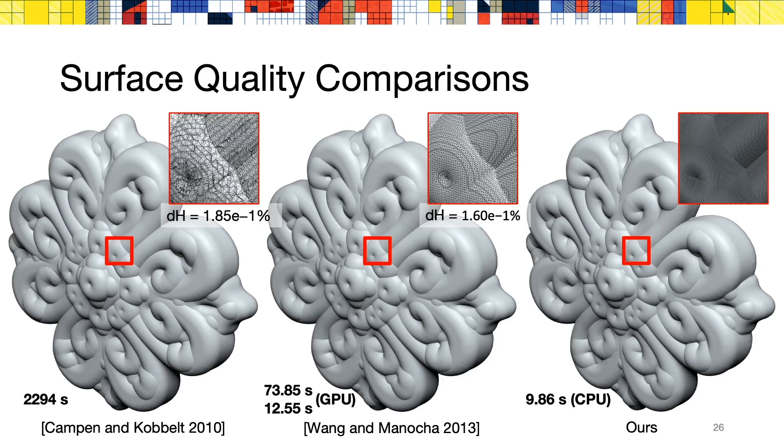In this slide, we show some qualitative results on the surface quality. One advantage of our method is that it computes an exact offset of the input dexels. As such, our results exhibit a good surface quality if the input shape was sufficiently well sampled. The Hausdorff distance between our result and previous work is shown below the zoomed pictures. For a more detailed comparison with previous work, please refer to our paper.